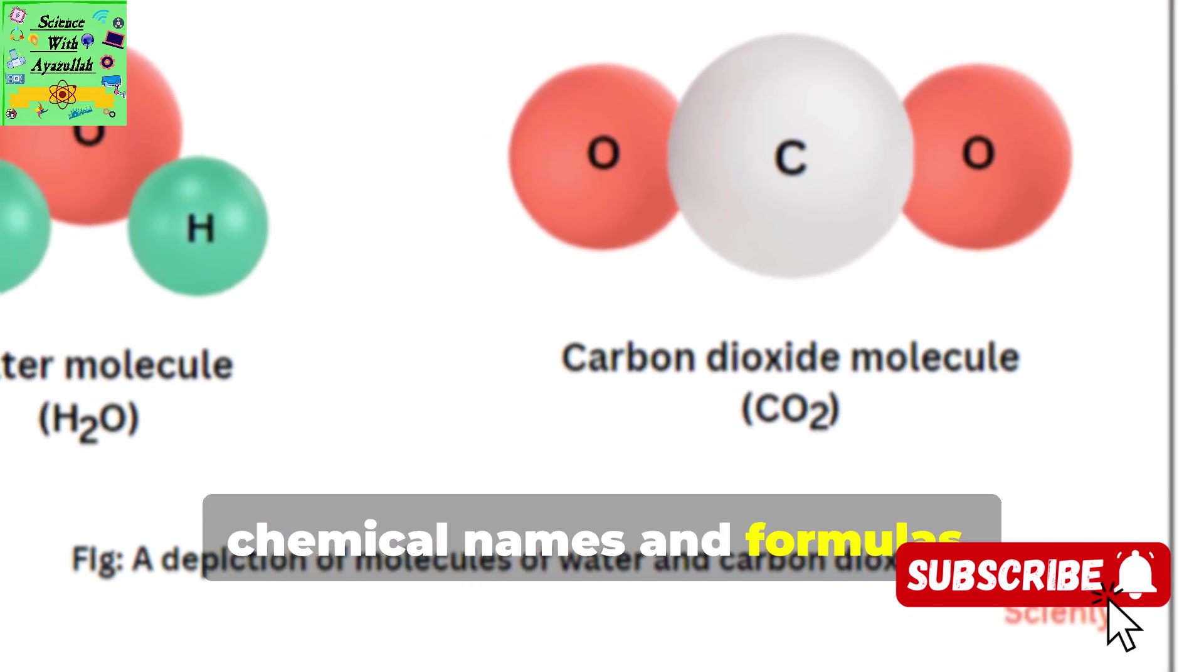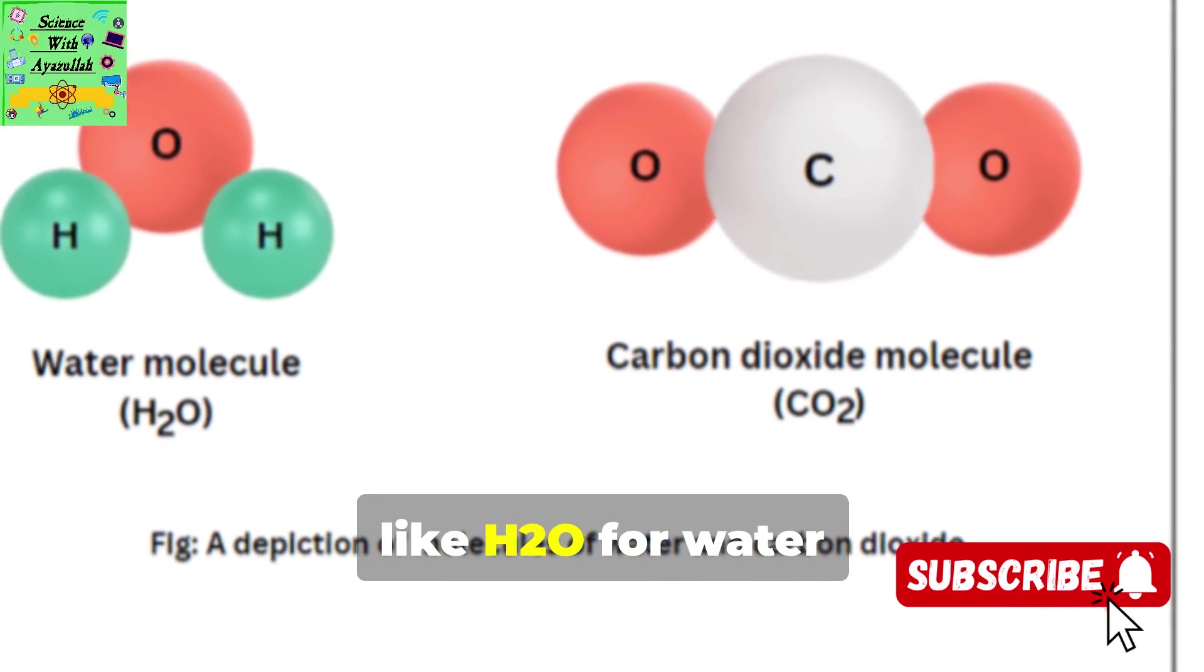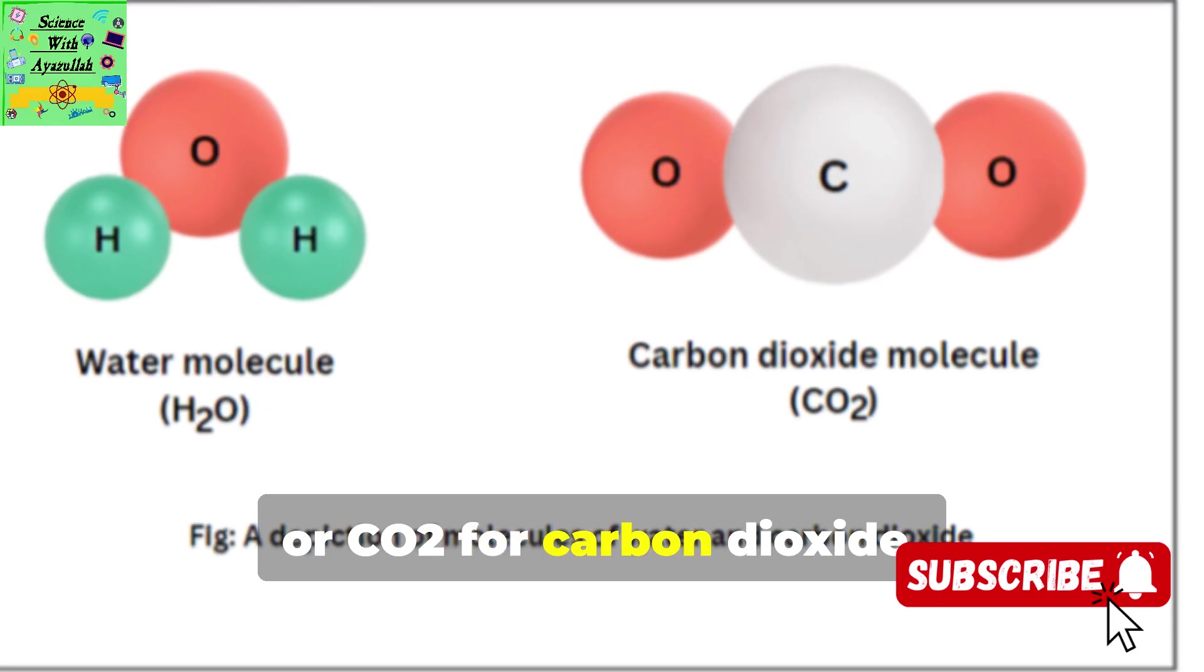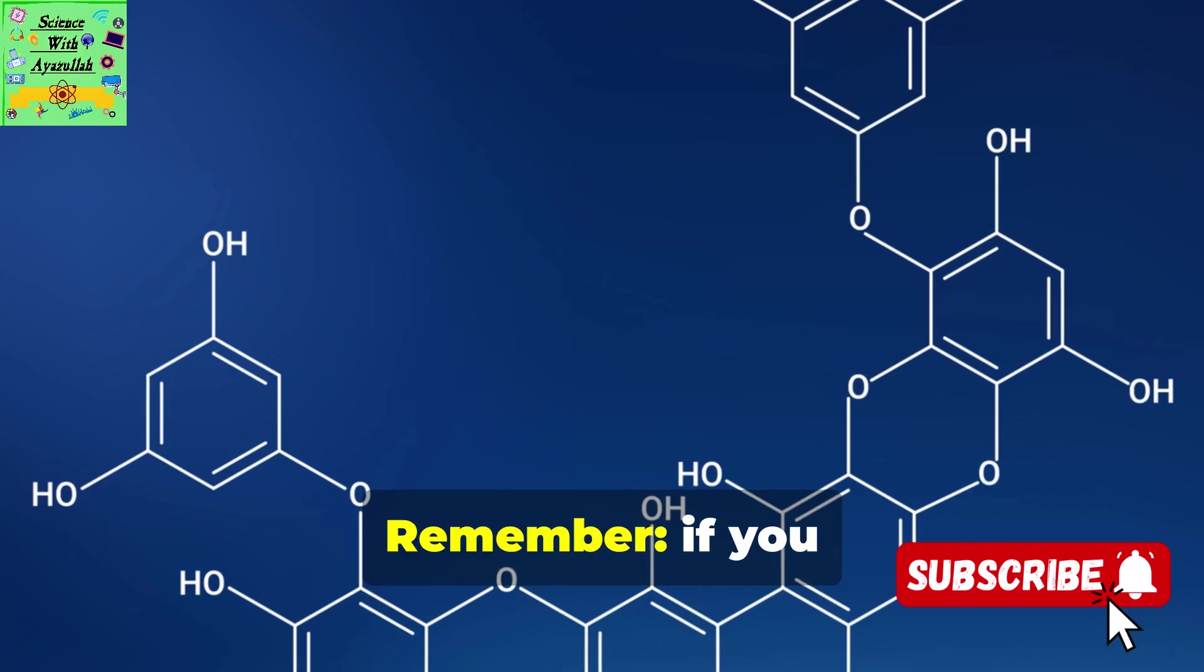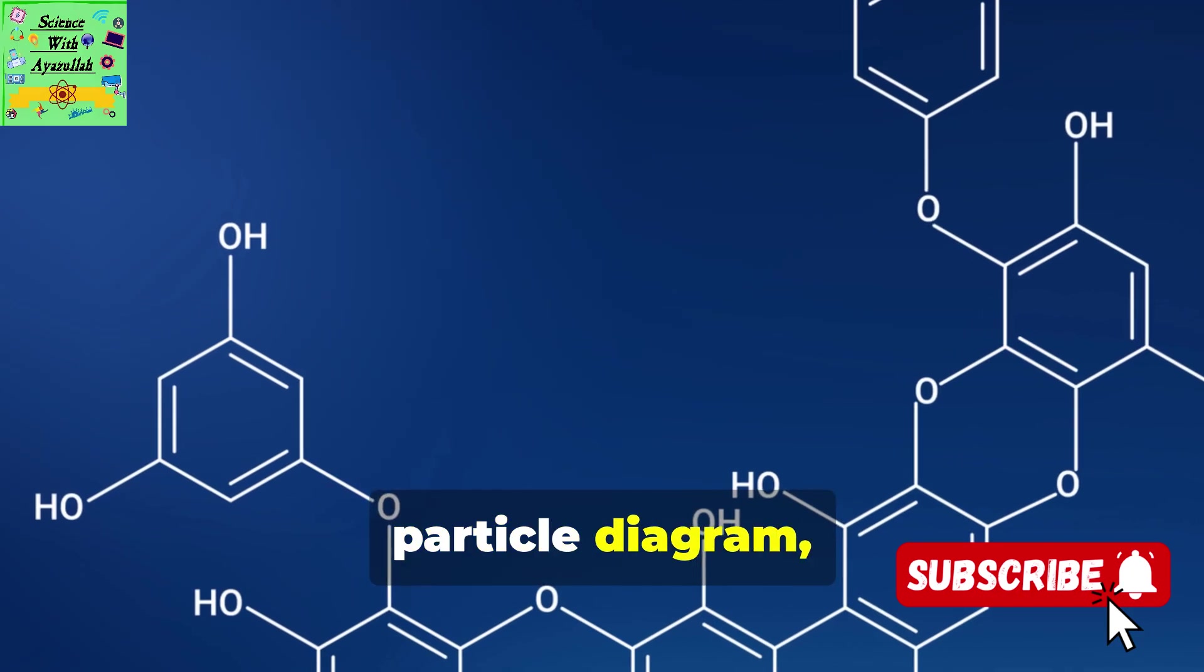Compounds have chemical names and formulas. The formula shows which elements are bonded together, like H2O for water or CO2 for carbon dioxide. Remember, if you see different types of atoms bonded together in a particle diagram, it's a compound.